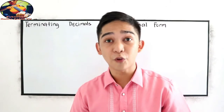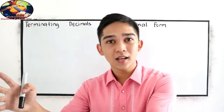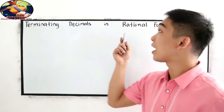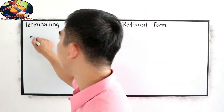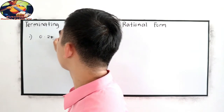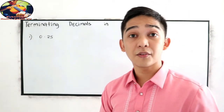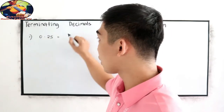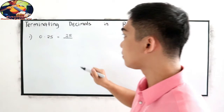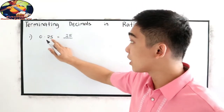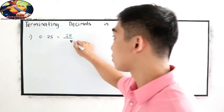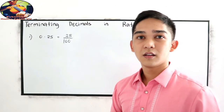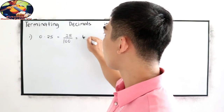Now we will be discussing how to transform terminating decimals into rational form. Let's say we have 0.25. This is equal to copying our whole number — in this case, 25 — over the number of decimal places. We have 2 decimal places, so replace them with zeros and write 1, giving us 25 over 100. Our final answer in simplest form is 1 over 4.